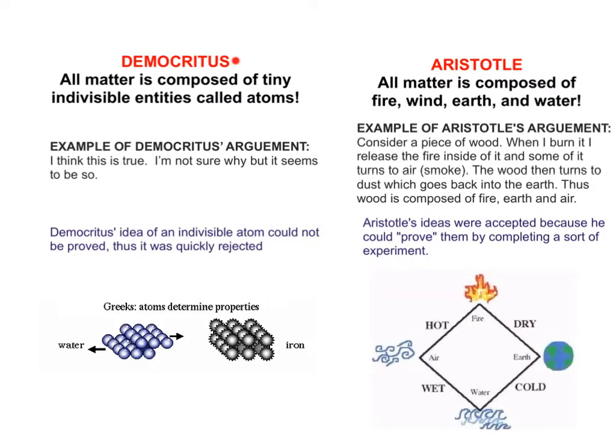Democritus was the first to come up with the idea of the atom. His idea was that all matter was composed of tiny indivisible entities called atoms. You could break them down into no smaller pieces. Those atoms would have all the properties of whatever element or thing we were looking at. For Democritus, he didn't really have a good argument for why he believed it. He just thought it was the truth. Because of this his ideas were quickly rejected. He didn't have any good experimental evidence.